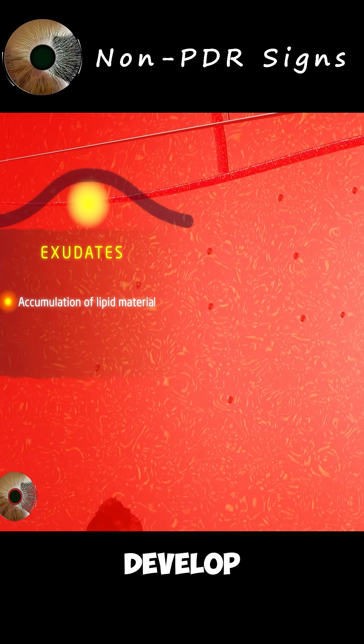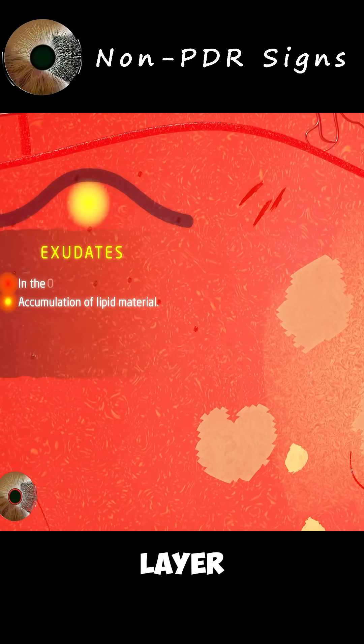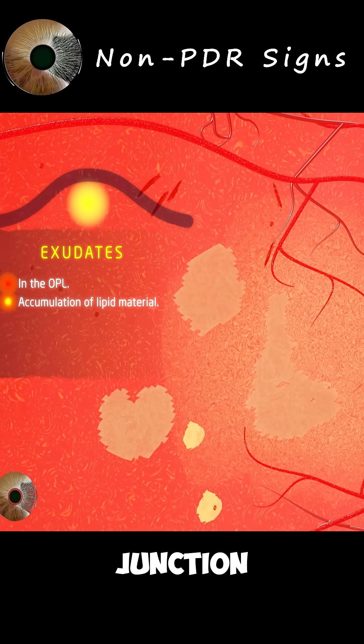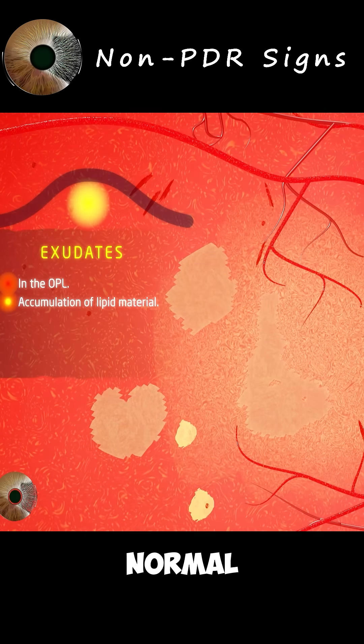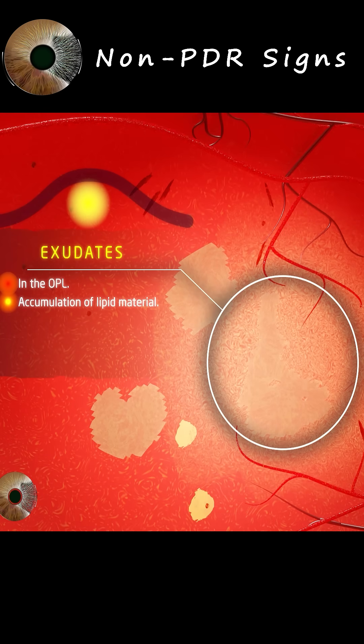Leakage results in accumulation of lipoprotein and lipid-filled macrophages, forming what we call exudate. Exudates develop in the outer plexiform layer, at the junction of normal and edematous retina.